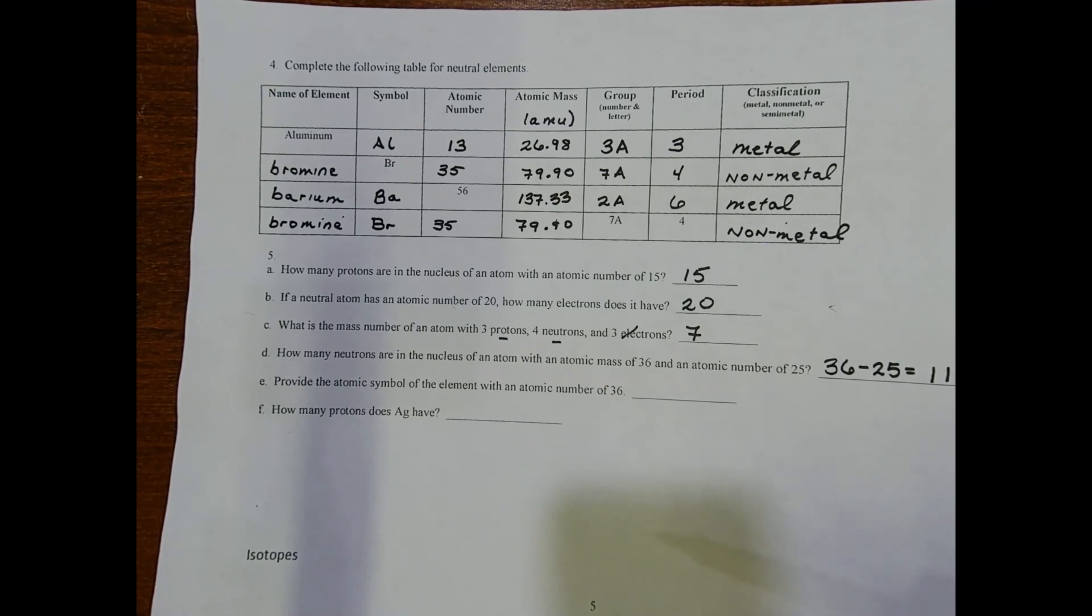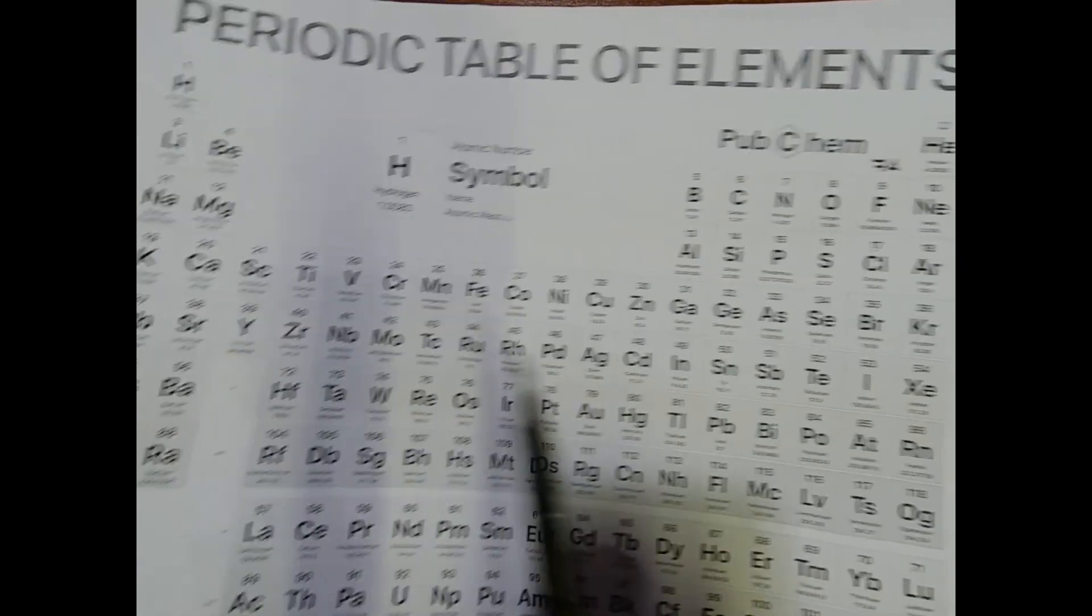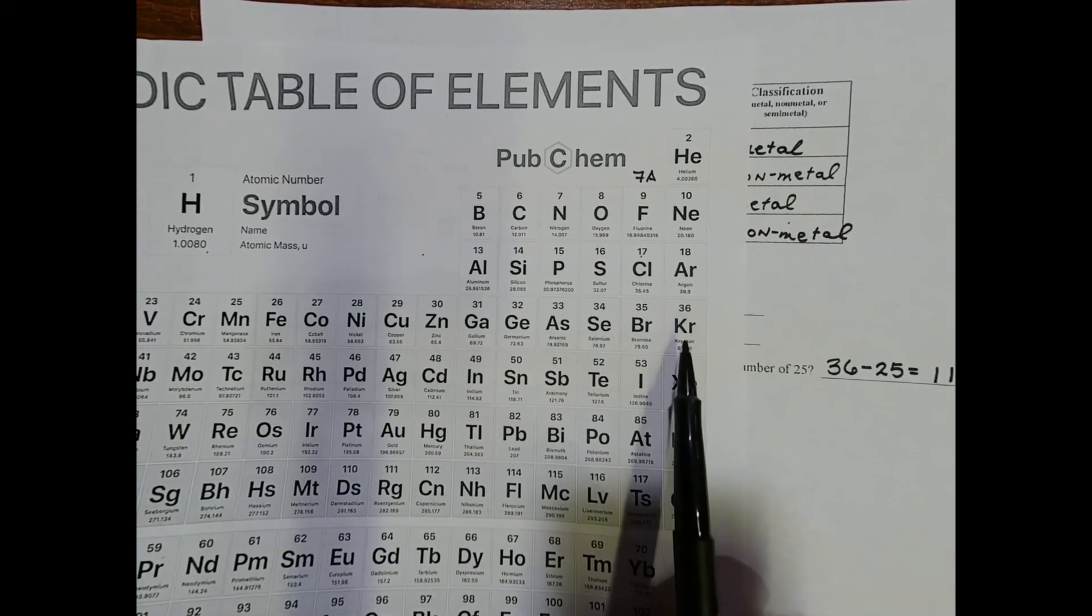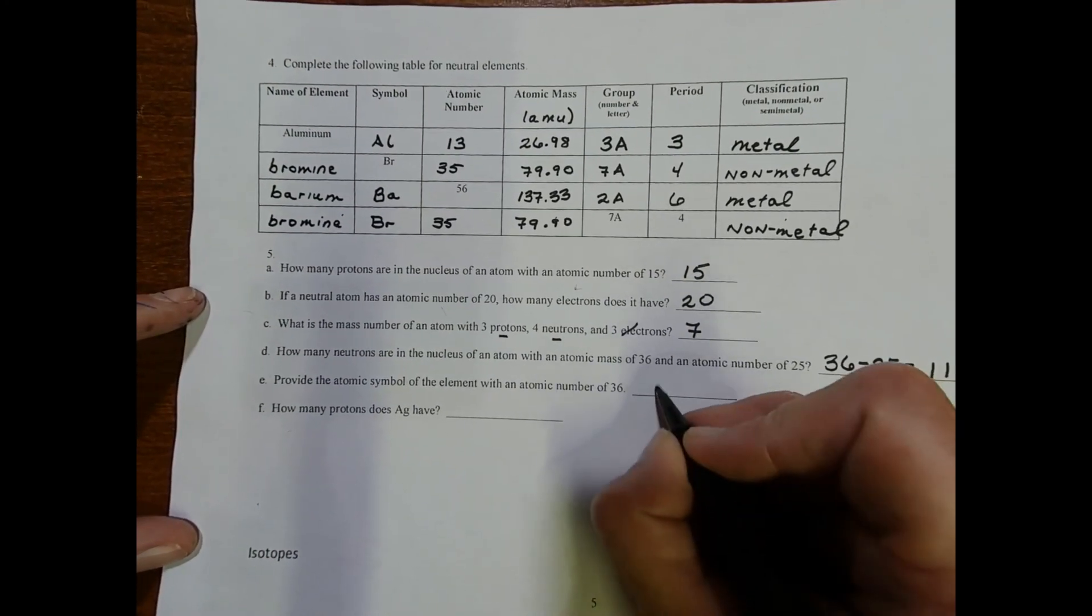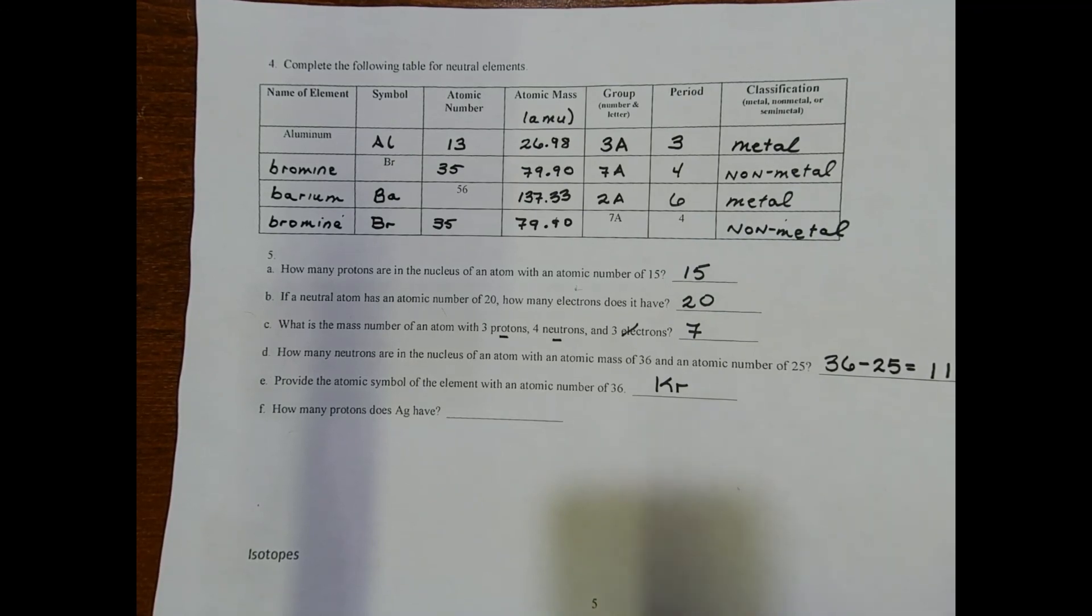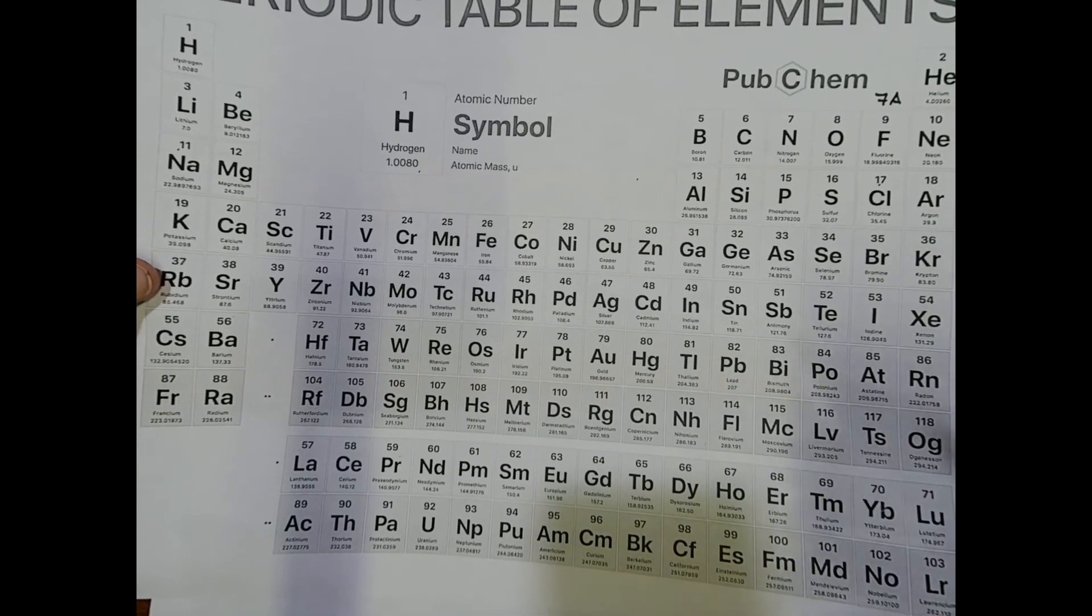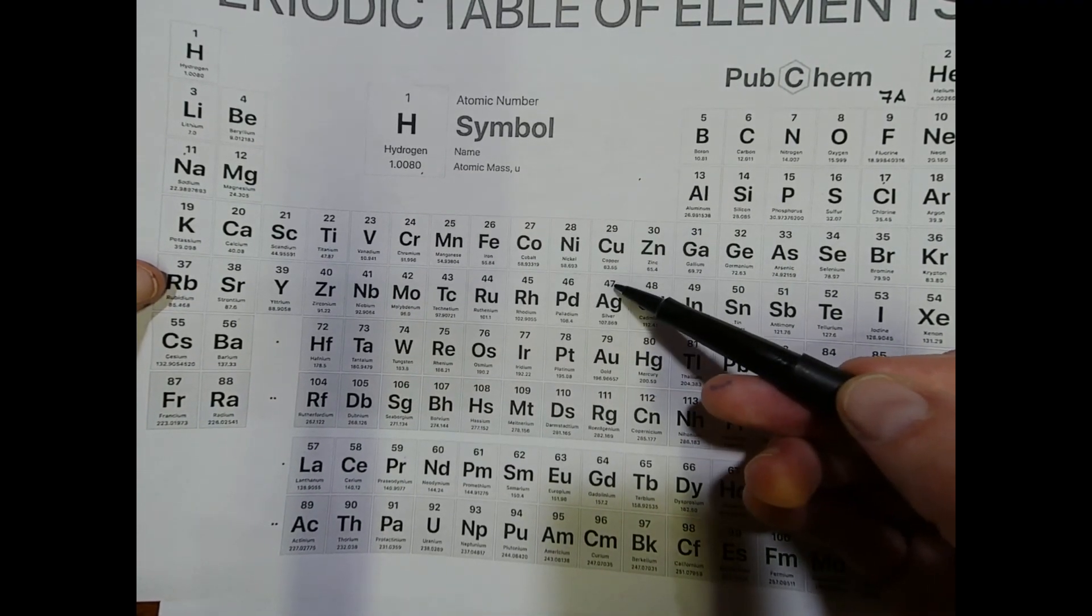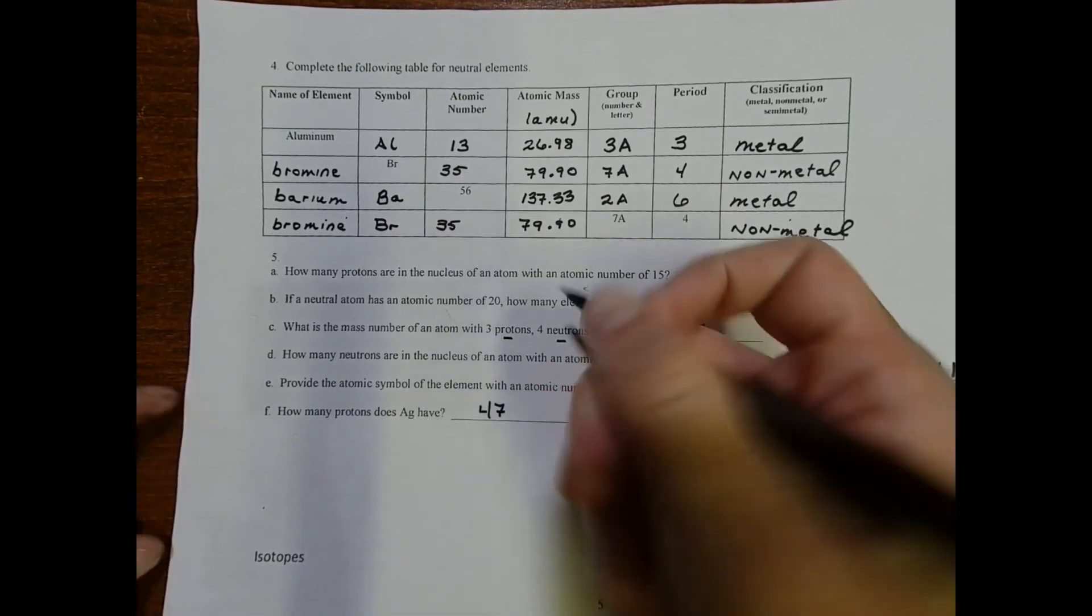On letter E, we're asked to provide the atomic symbol of an element with the atomic number of 36. It looks like we're over here—krypton—so the atomic symbol is just Kr. In the last problem: How many protons does silver have? We need to find silver on the periodic table. Its symbol is Ag and it's number 47, so that tells me that it has 47 protons.